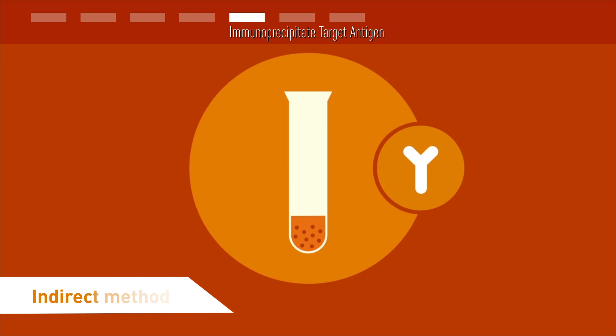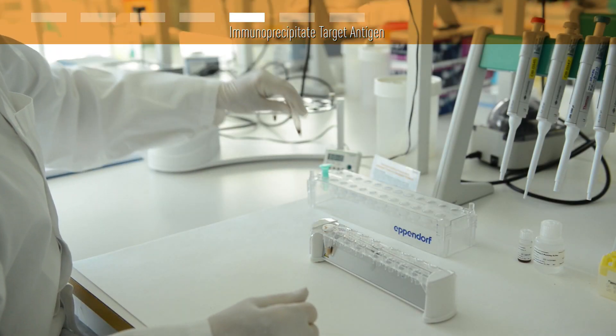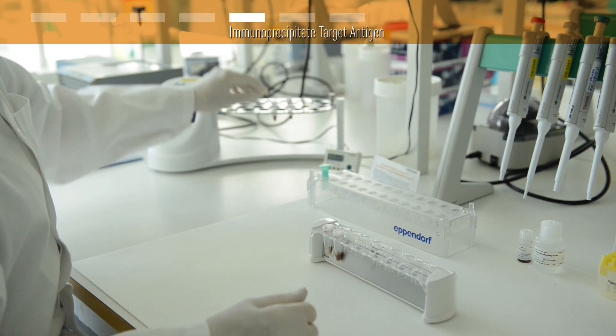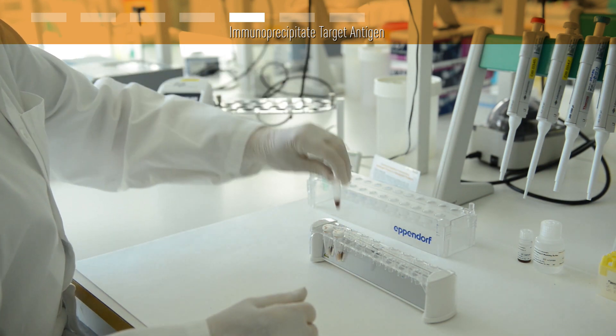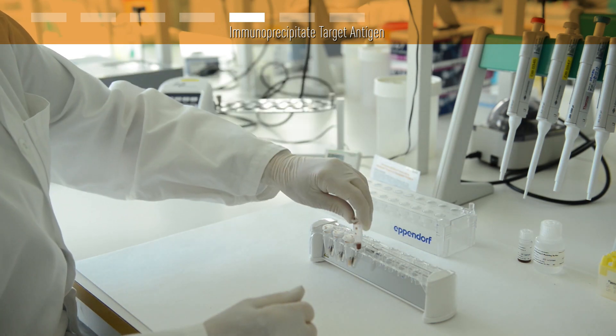This indirect approach is also a good alternative when you're working with low abundance proteins, as well as for protein and nucleic acid complexes, for example, in a ChIP assay. Just remember not to exceed the antibody binding capacity of the beads, as any excess-free antibody will bind to the beads much faster than your protein complex will.